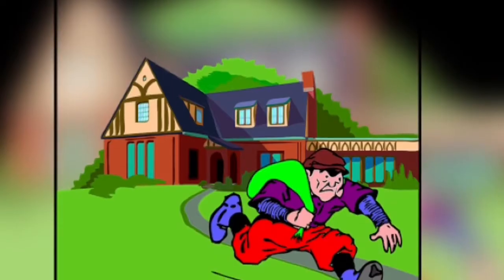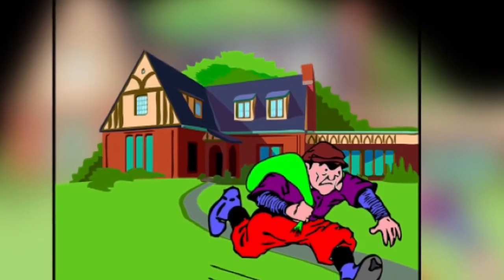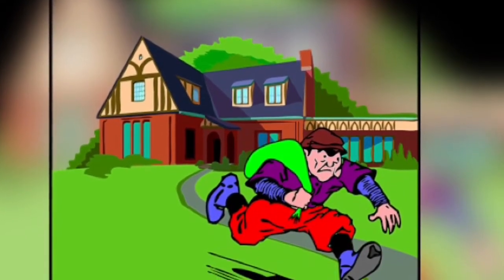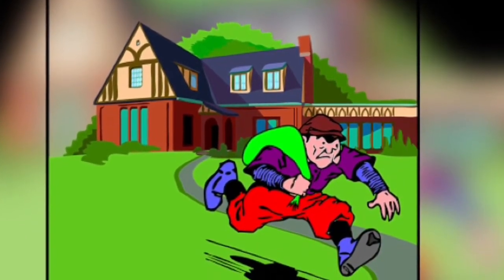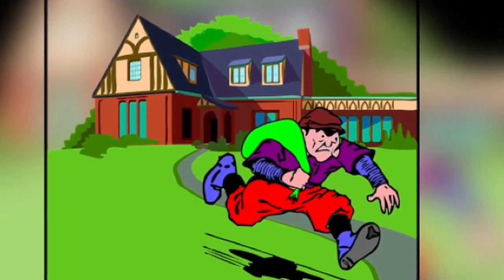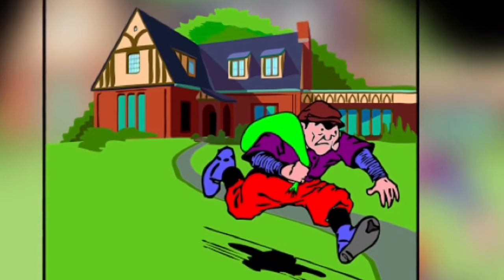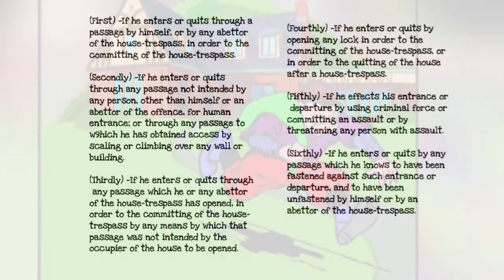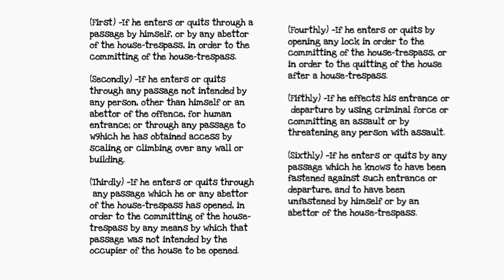So if it is a house trespass and the trespasser entered or exited in one of these six ways, then it's house breaking. What are these six ways in section 445? You can see the six ways on your screen right now.